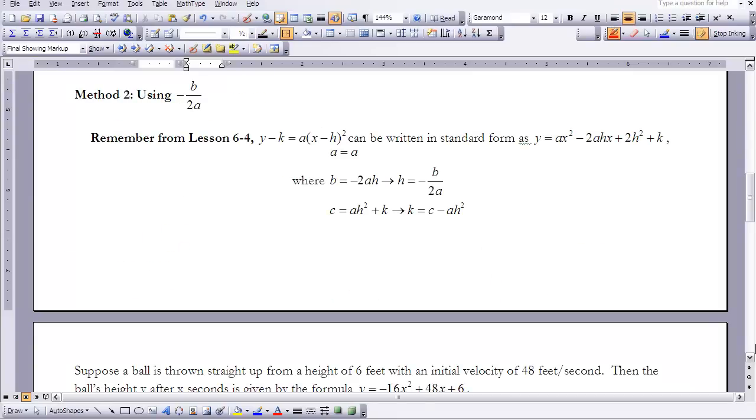The second method we can use to take an equation from standard form and put it into vertex form is using the opposite of b over 2a. We want to use this method when our value for a is not 1 or negative 1. It's a little more complicated, so I'm going to draw your attention to lesson 6.4. When we expanded the equation y minus k equals a times x minus h squared and wrote it into standard form, we found we got this large equation. We said a stood for a, b was the opposite of 2ah, and c stood for ah squared plus k.